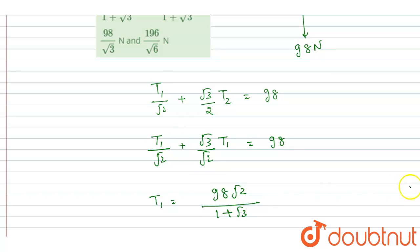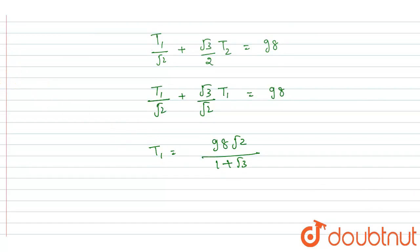Then I will get 98 root 2 will be here and it will be 1 plus root 3. This will be the T1. And as we know that T2 is root 2 T1, so multiply this with root 2. So it will be 98 into 2.